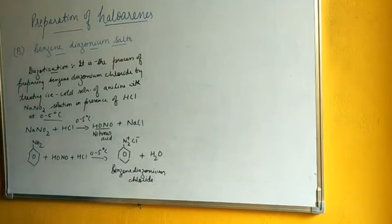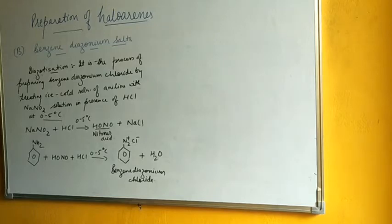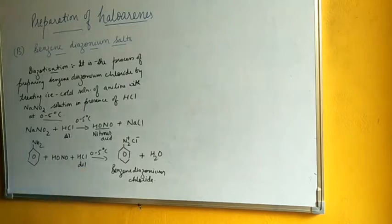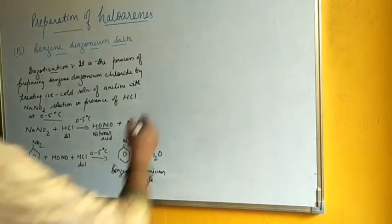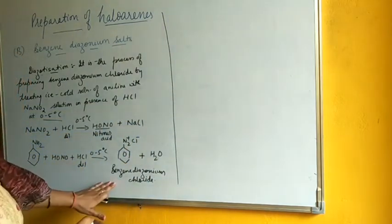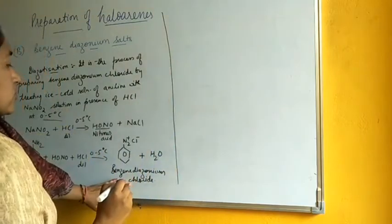Benzene diazonium chloride is the compound formed. When asked to define diazotization, write the definition and the reaction — it is a very important reaction. The acid used is dilute HCl, and throughout the reaction the temperature is kept low at 0 to 5 degree Celsius.